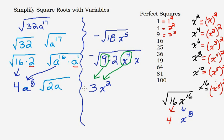Don't forget the negative sign — it was outside the square root so just bring it down. What's left inside the square root stays inside, giving a final answer of negative 3x squared times the square root of 2x.